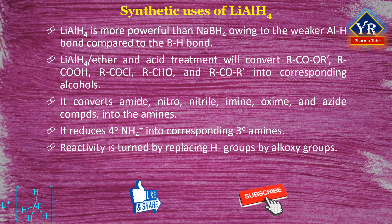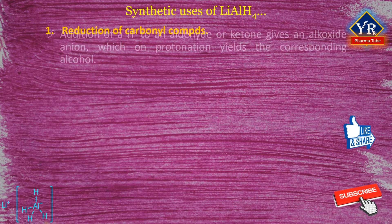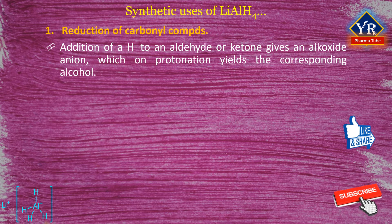Lithium aluminium hydride is most commonly used for the reduction of esters and carboxylic acids to primary alcohols. Prior to the advent of lithium aluminium hydride, this was a difficult conversion involving sodium metal in boiling ethanol. Number 1: Reduction of carbonyl compounds. Addition of a hydride ion to an aldehyde or ketone gives an alkoxide anion, which on protonation gives the corresponding alcohol.